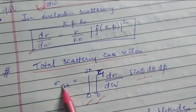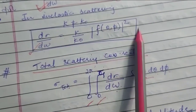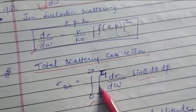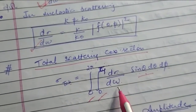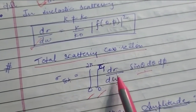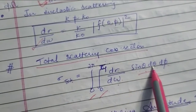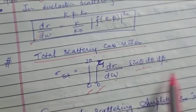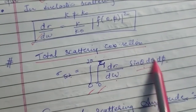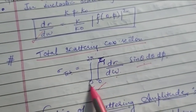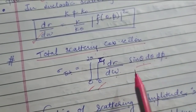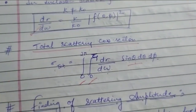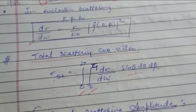The total scattering cross section σ_total is obtained by integrating the differential cross section over all solid angles: σ_total = ∫ (dσ/dΩ) sin θ dθ dφ, integrating over the full sphere (θ from 0 to π, φ from 0 to 2π).